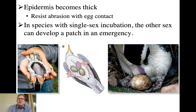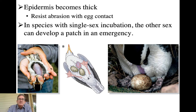Typically in species where only one sex incubates, it's going to be the female. However, if the female dies due to predation mid-incubation, the male can develop a brood patch in an emergency and adopt that behavior. This is less likely to happen early in incubation since little is invested yet — the male may bail and try to remate. But if the nest is almost ready to hatch, it makes sense to continue, and in those circumstances a brood patch can develop.